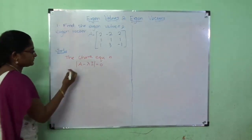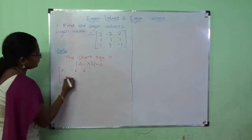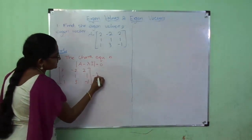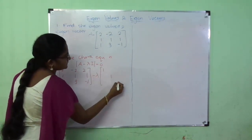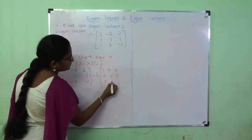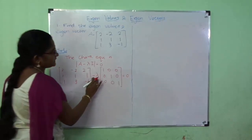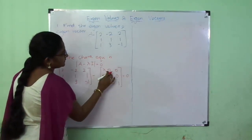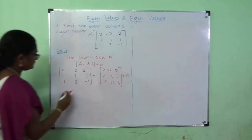Let us write the matrix A = [[2, -2, 2], [1, 1, 1], [3, 3, -1]] minus λ times the identity matrix. In the identity matrix, all the diagonal entries are 1 and the remaining elements are 0. We multiply λ inside: λ into 1 gives λ, and λ into 0 remains 0, so the diagonal entries become λ.